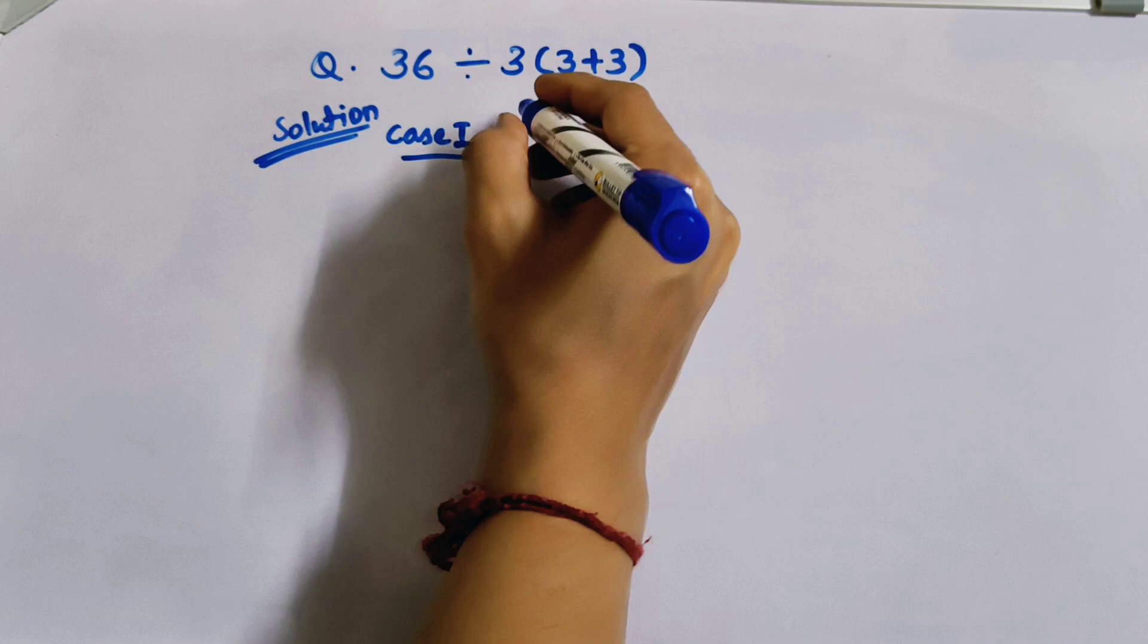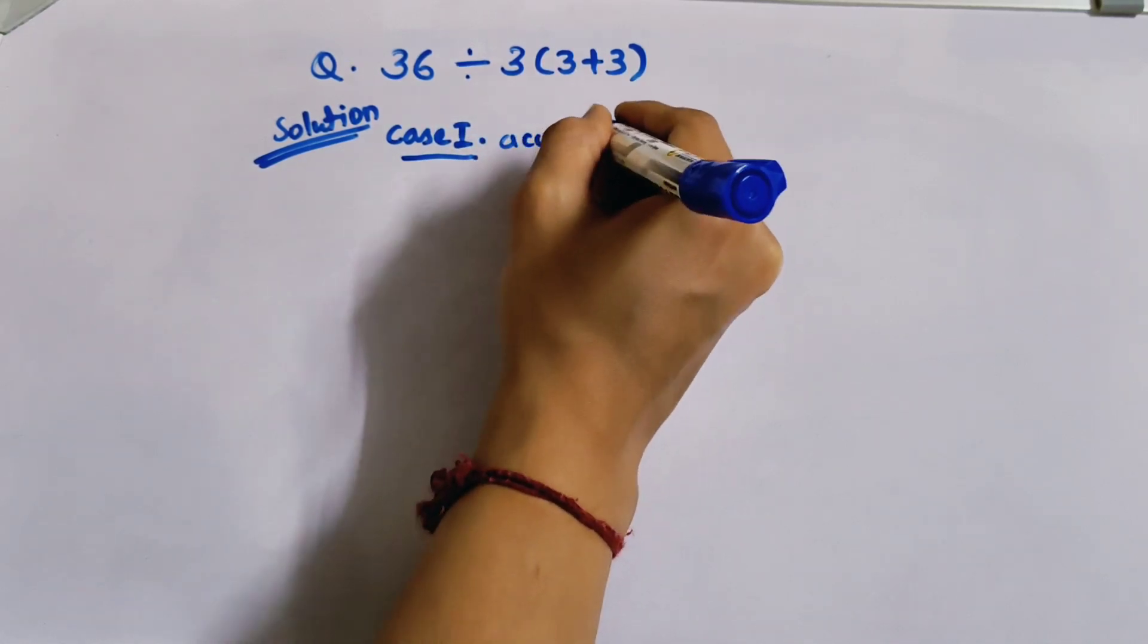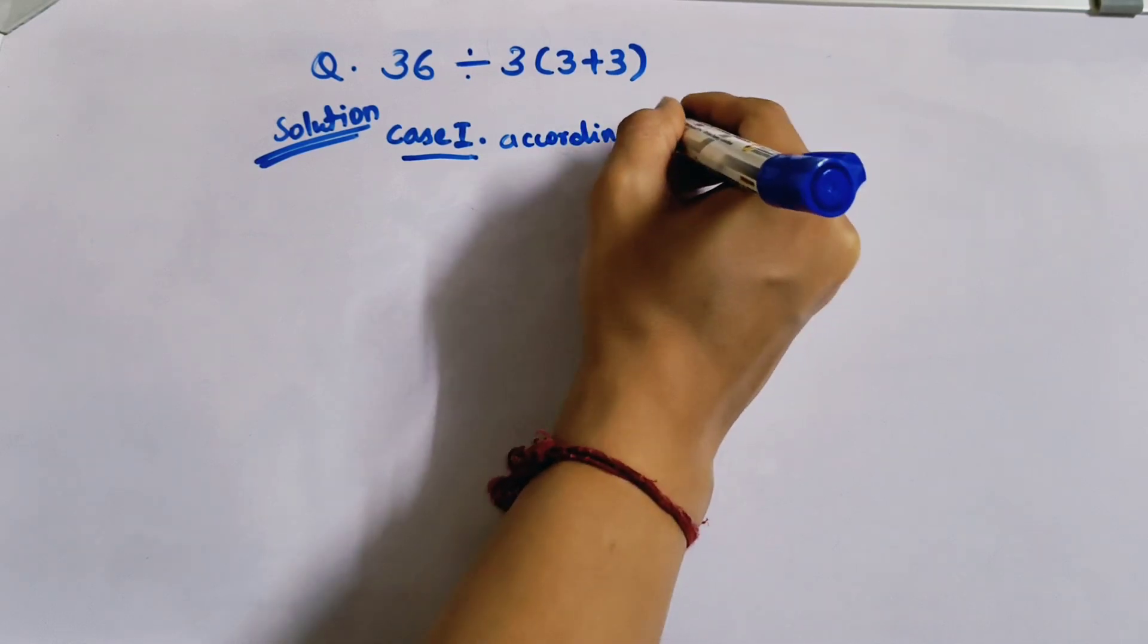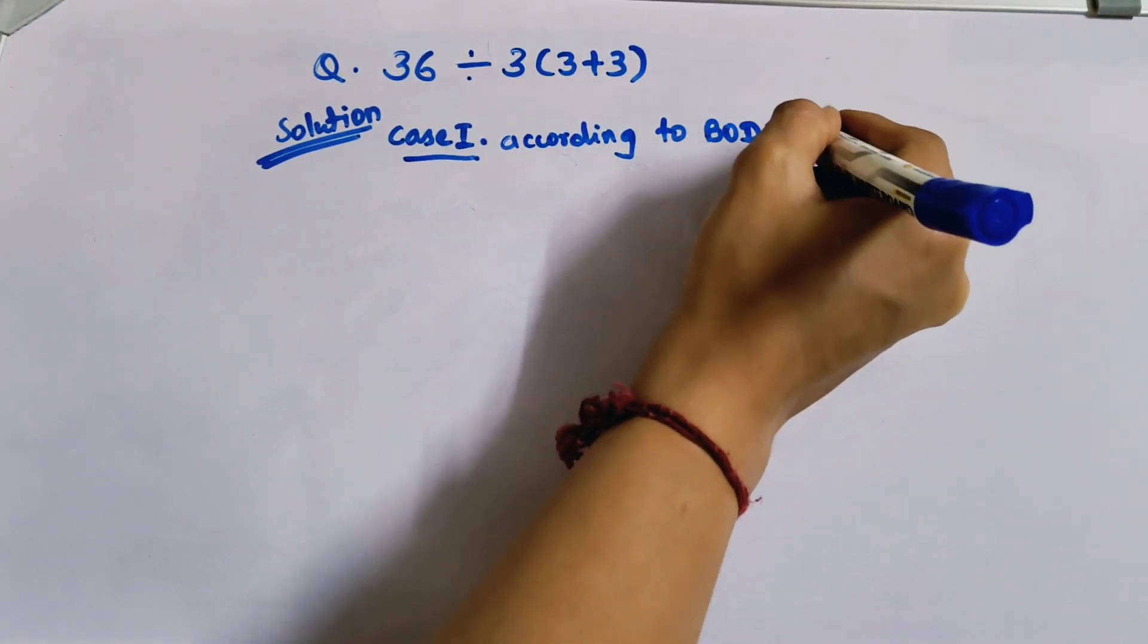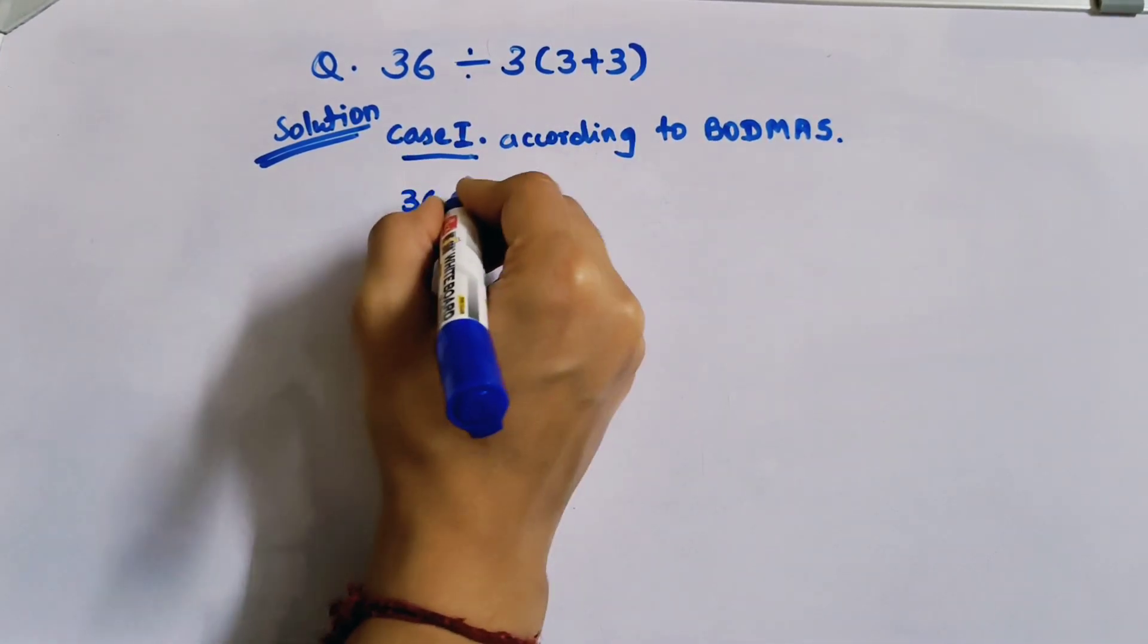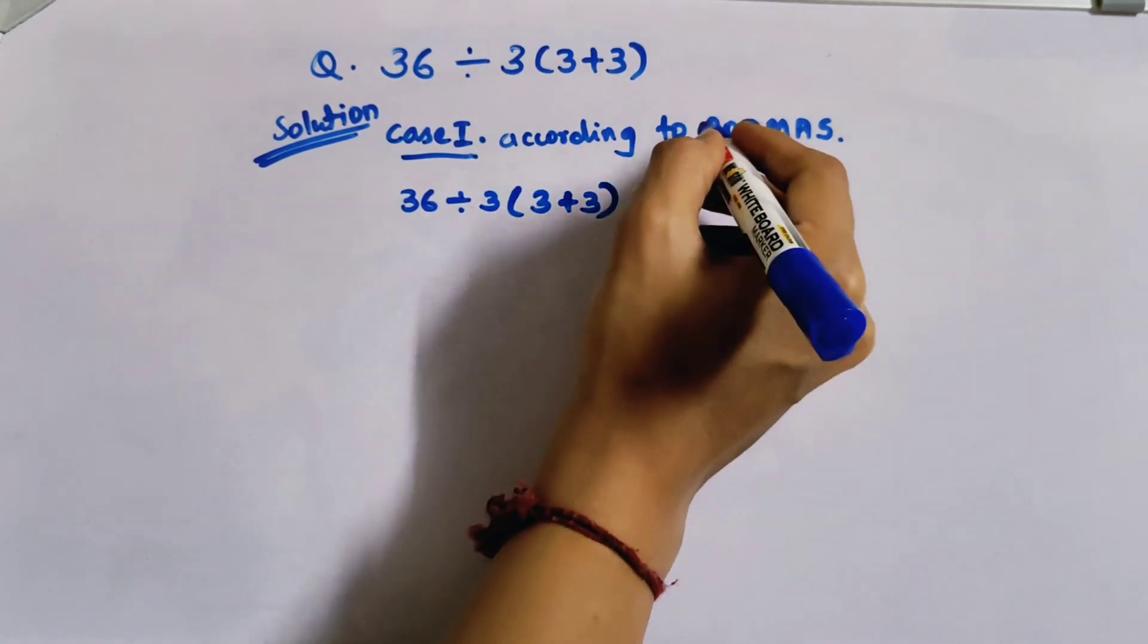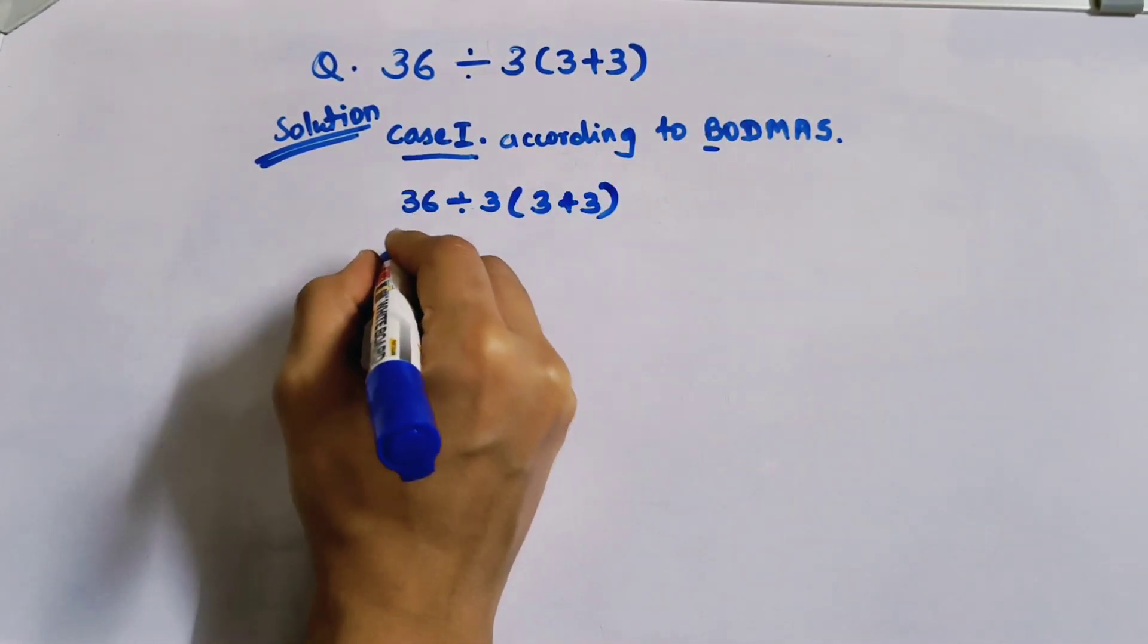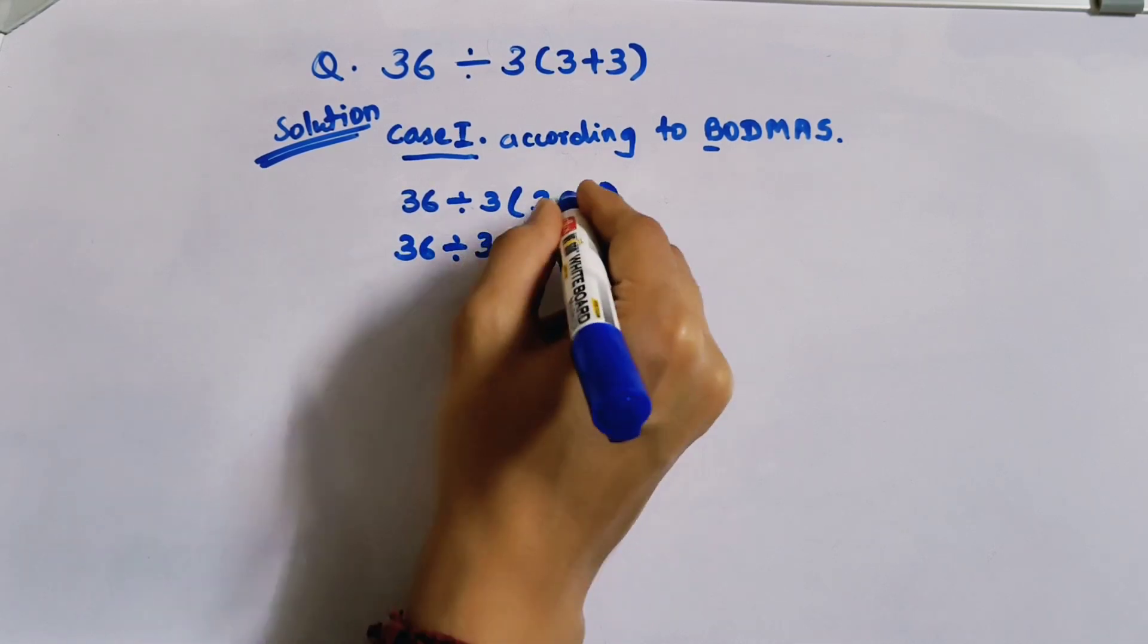According to BODMAS, first we write... B stands for bracket, so we'll remove the bracket. So 3 plus 3 equals 6.